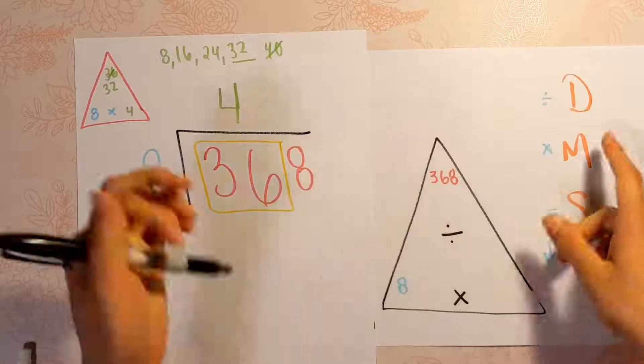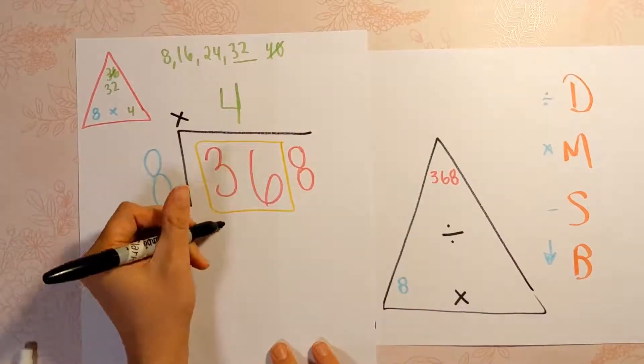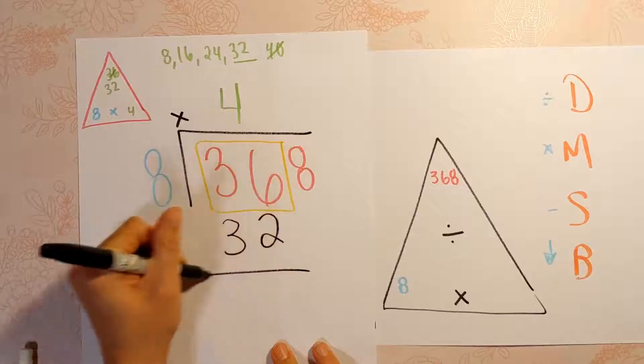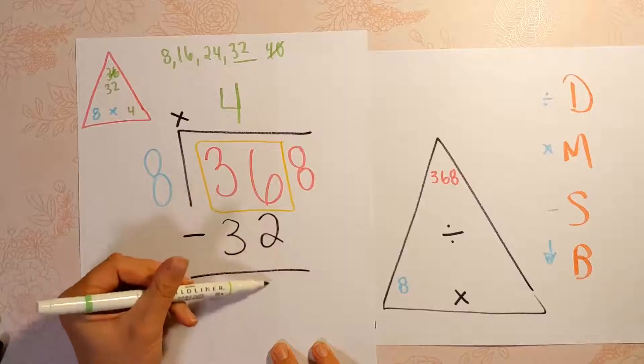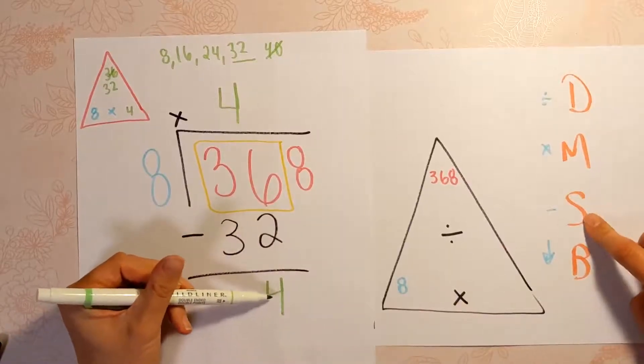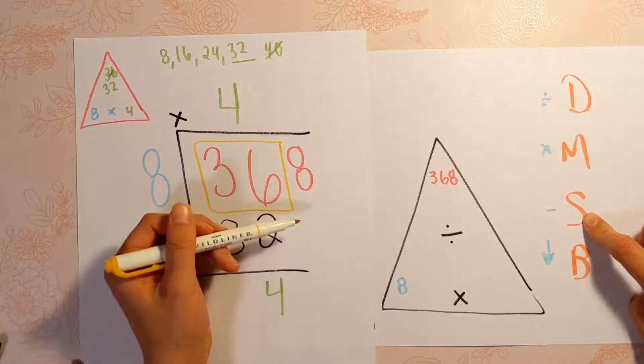So we'll do 4 times 8 and put it down here. 4 times 8 is 32. That's as close as we could get, and then we'll subtract to figure out the remainder. 36 minus 32 is 4. Alright, that's the last thing we touched, so we're going to work in this area, and now we're going to bring down.